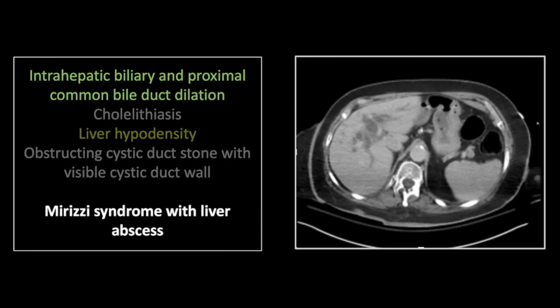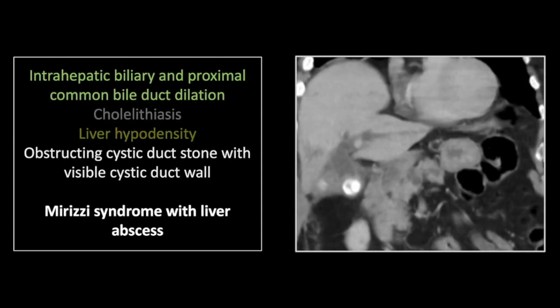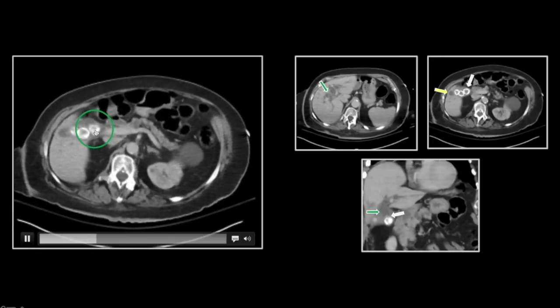Our next case is Mirizzi syndrome, where there is obstruction of the common hepatic duct by a stone in the cystic duct. There is clearly very marked dilation of the intrahepatic ductal system. In the gallbladder itself, there are multiple classic cholesterol stones — faceted, peripherally calcified. There is also an intrahepatic fluid collection consistent with cholecystitis and an intrahepatic abscess. Most importantly, there is obstruction of the common hepatic duct. You can see the dilated duct above the level of the obstructing stone.